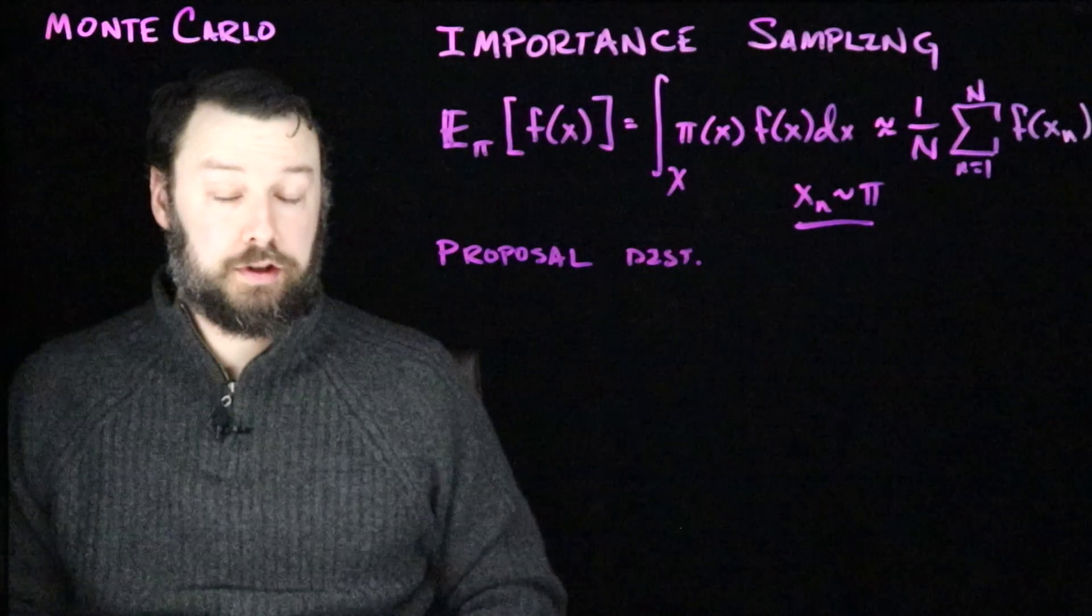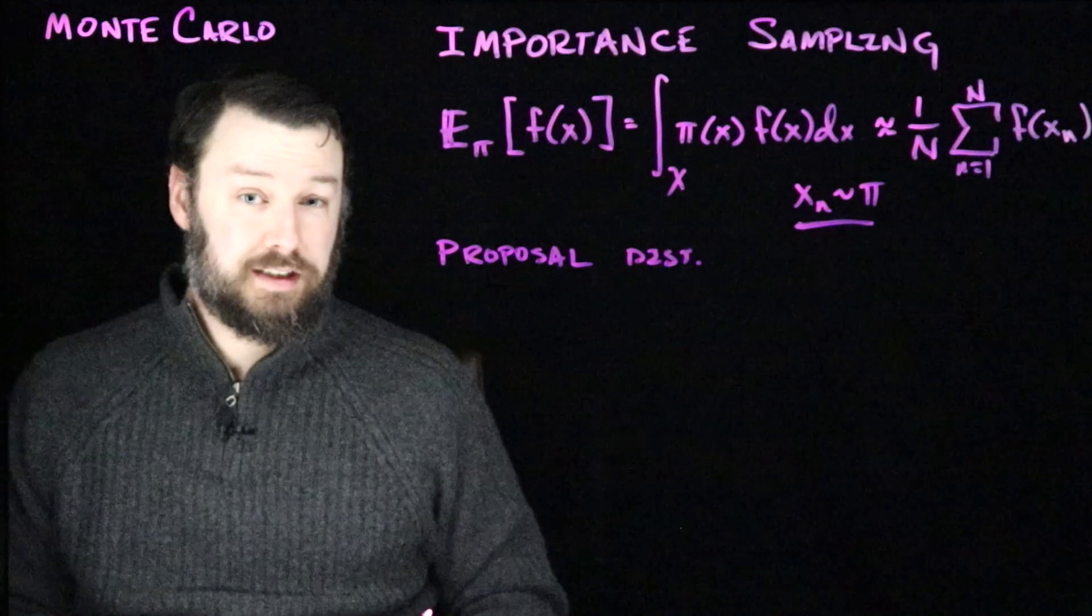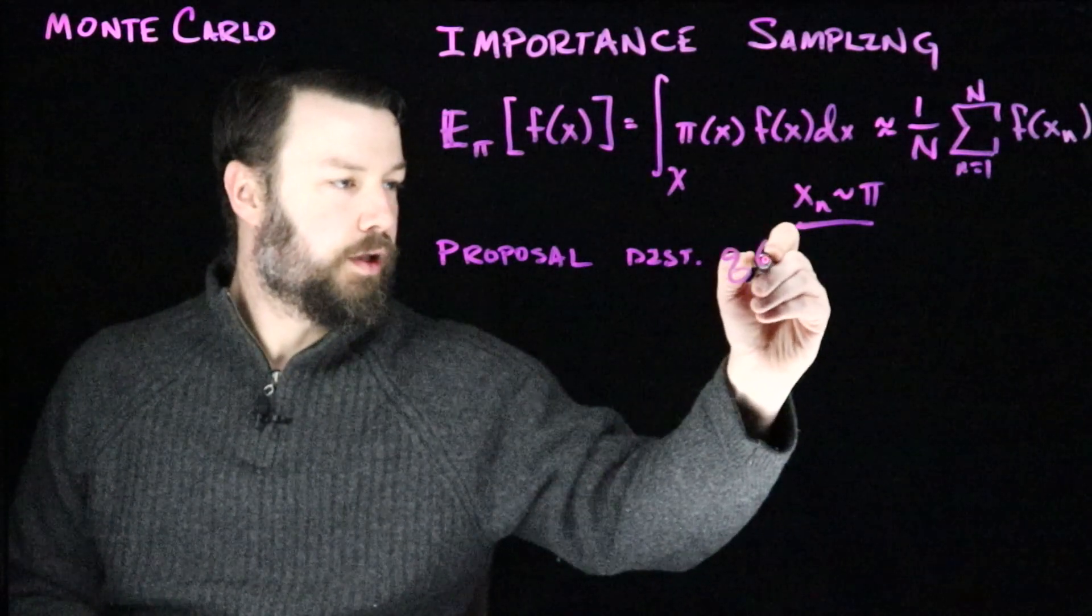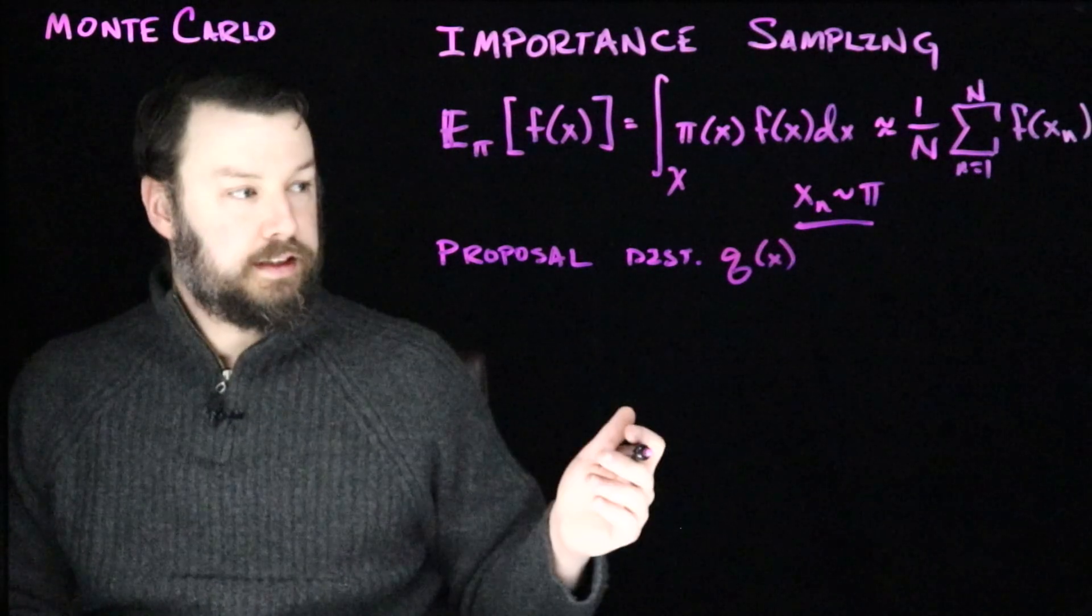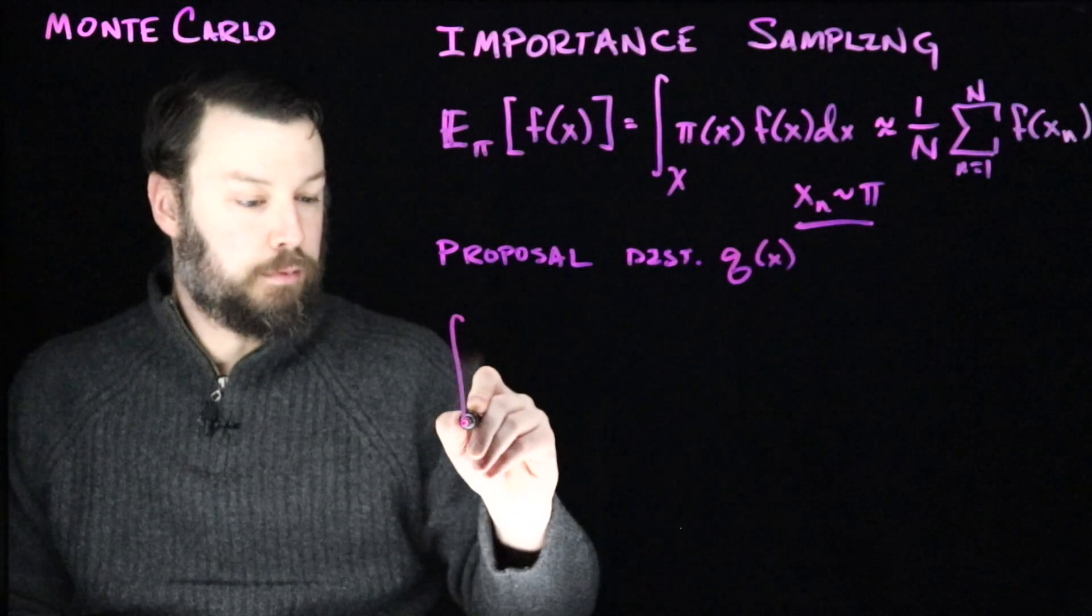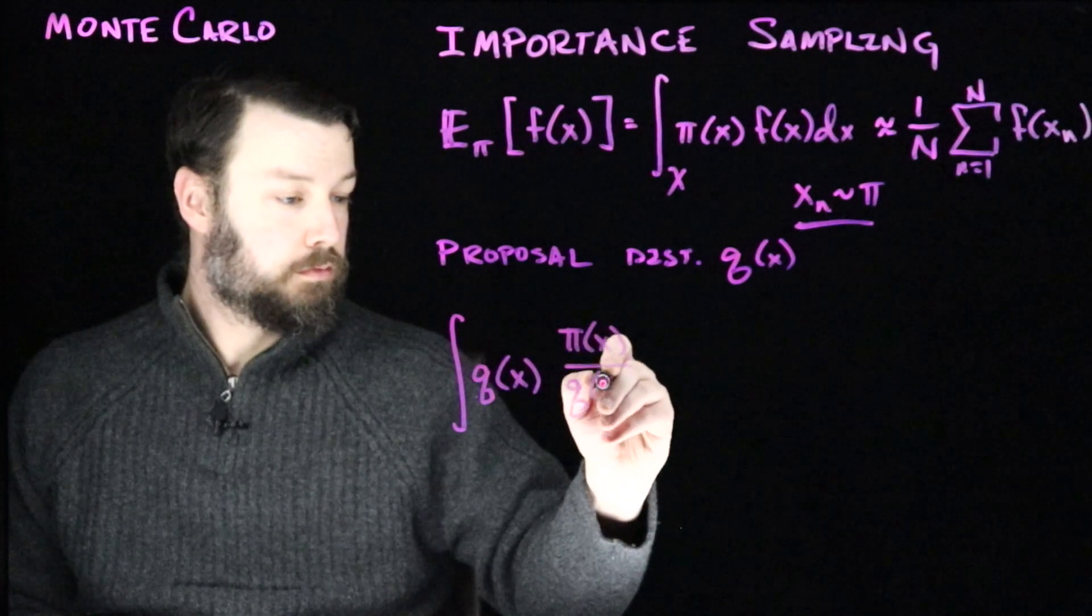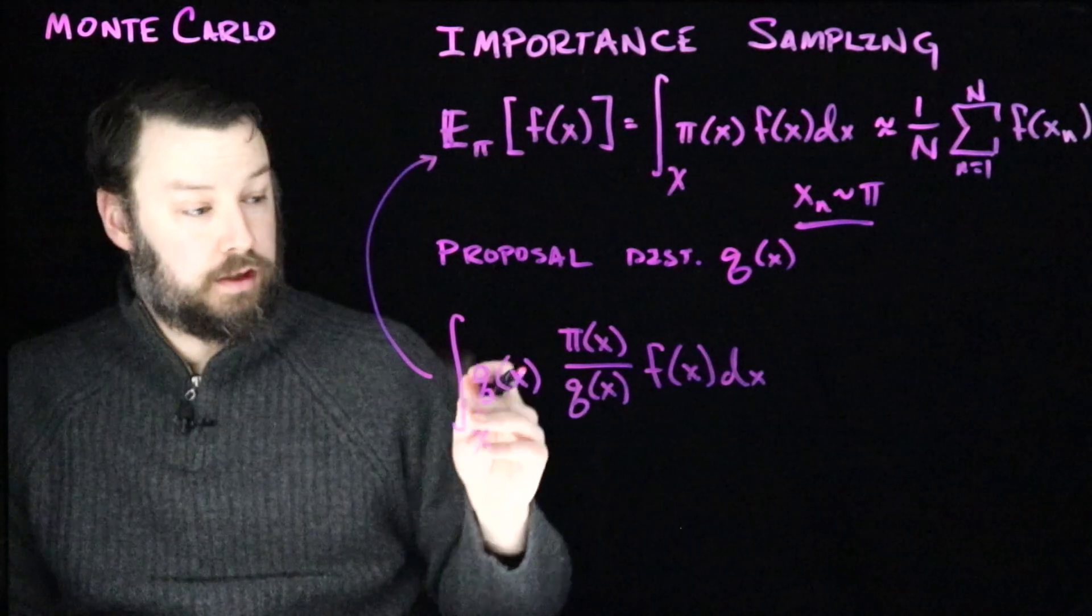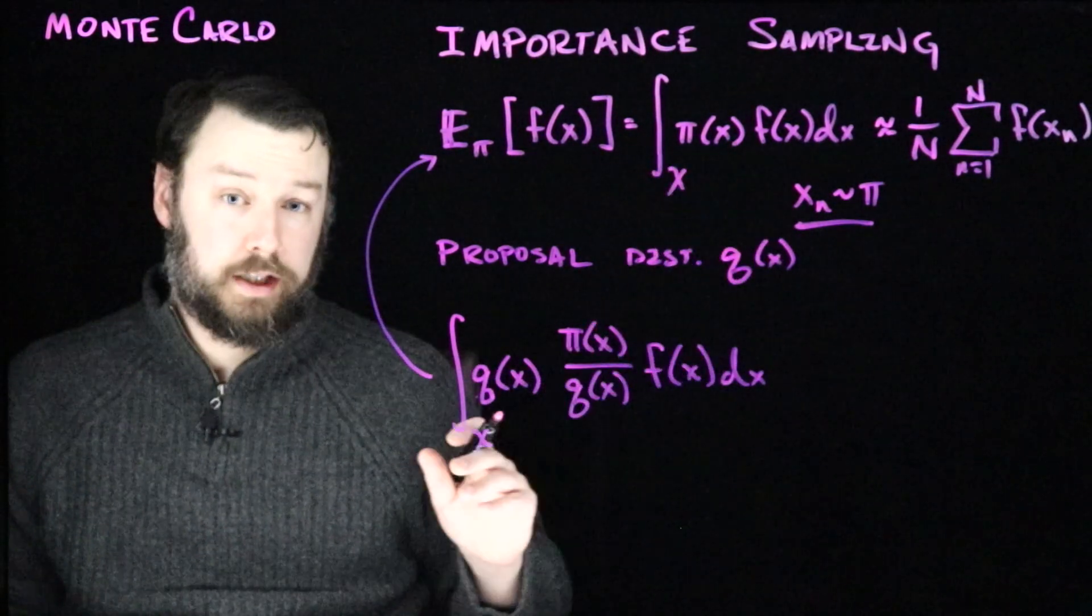And this distribution, which we often call the proposal distribution, it has a lot in common with the proposal distribution that is that upper bounding distribution that we used in rejection sampling. But here, we don't need it to be an upper bound. We just need to know its probability density function, and it needs to be something easy to sample from, like a Gaussian. And typically, we would denote this with a q. So here, I'm writing q as the probability density function associated with this proposal. The idea is that we can rewrite this expectation by dividing and multiplying by q. So I can write something like this in place of this. I haven't done anything fancy here. All I've done is divided and multiplied by q.